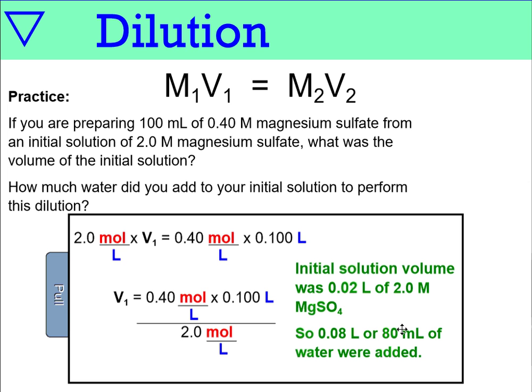So our initial volume was 20 milliliters or 0.02 liters. And our final volume in the question was 100 milliliters. So that means 80 milliliters of water must have been added. So in this dilution, the number of moles of particles didn't change. If I take this 20 milliliters and I multiply by 2, I get 0.04. If I take 0.4 times 0.1, I get 0.04. So the number of moles of particles stayed the same. It's the volume that changed.